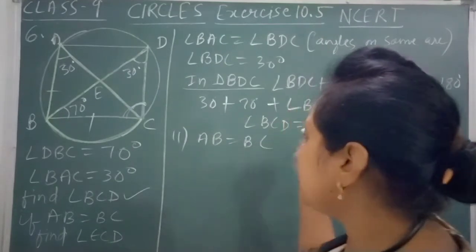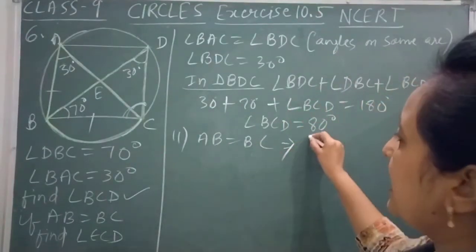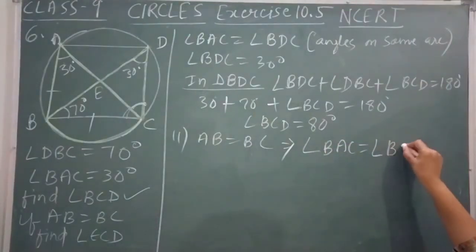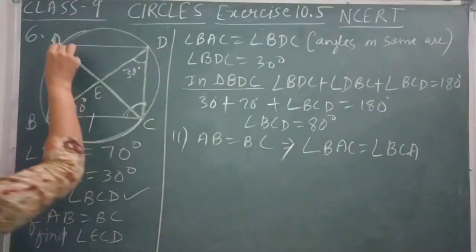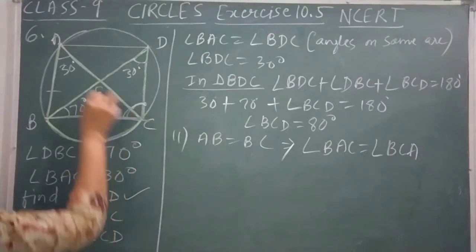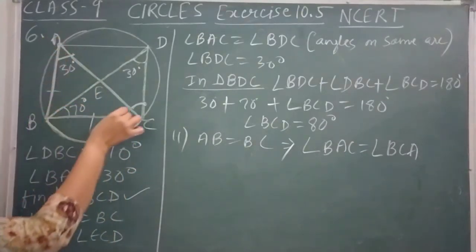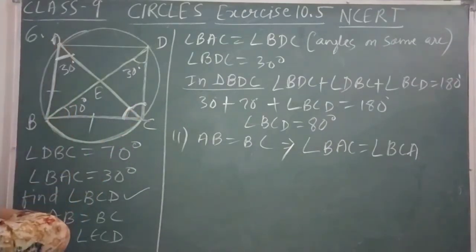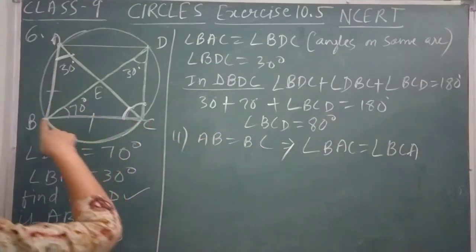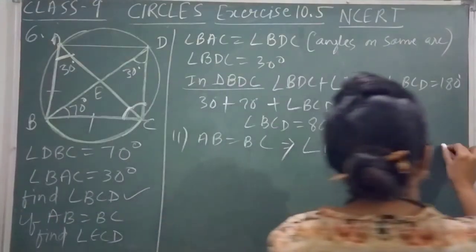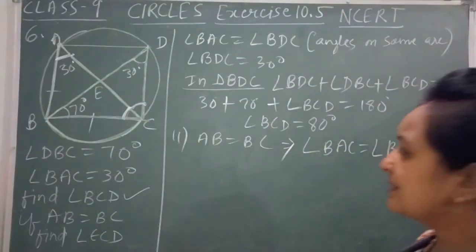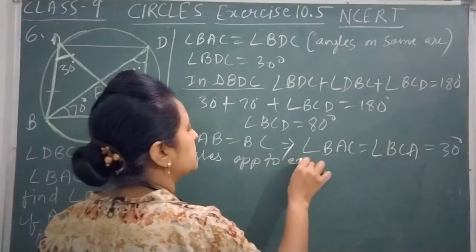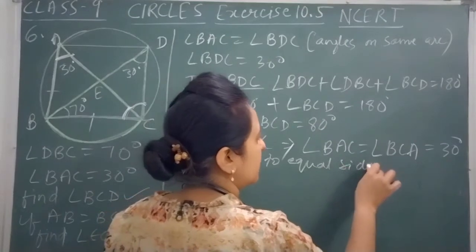If AB is equal to BC, then we can say angle BAC is equal to angle BCA, and both will be equal to 30 degrees. This is because angles opposite to equal sides are equal.